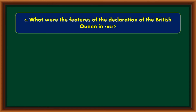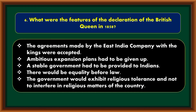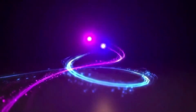What were the features of the declaration of the British Queen in 1858? The agreements made by the East India Company with the kings were accepted. Ambitious expansion plans had to be given up. A stable government had to be provided to Indians. There would be equality before law. The government would exhibit religious tolerance and not interfere in religious matters of the country.